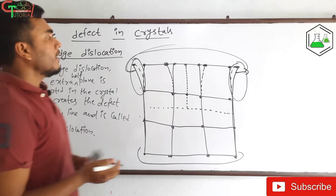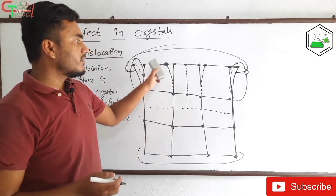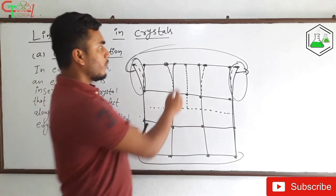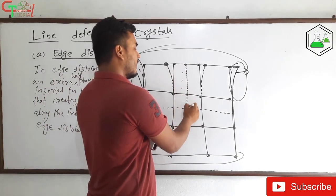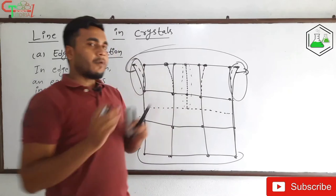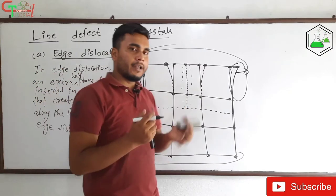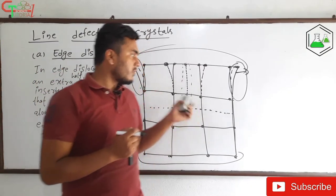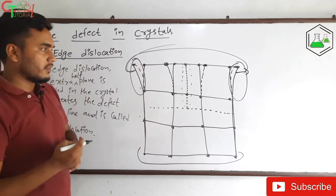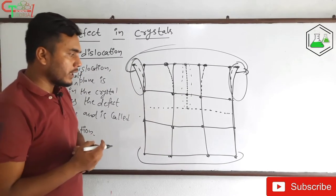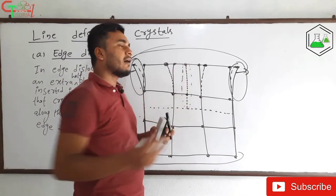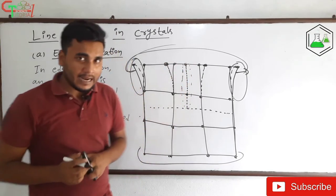Initially the crystal was in perfect shape, but when we insert the half plane, the shape of the crystal is distorted. This is the creation of a defect called edge dislocation. We generally find this half-plane form in edge dislocation.